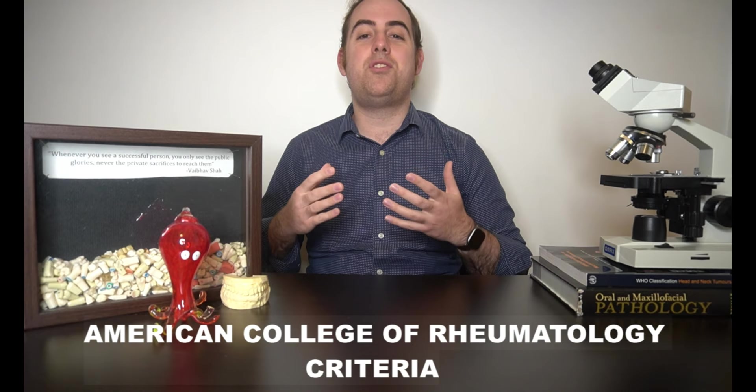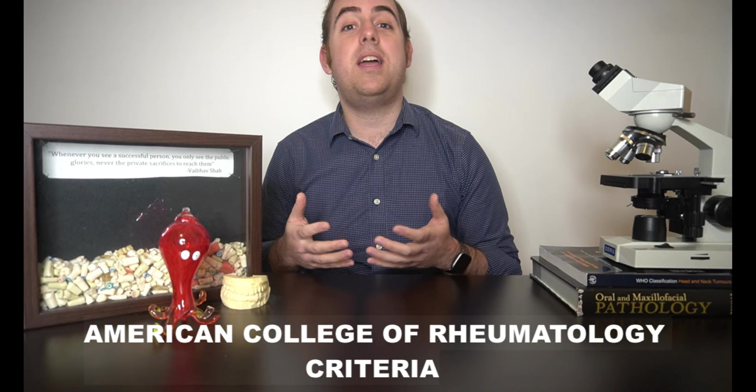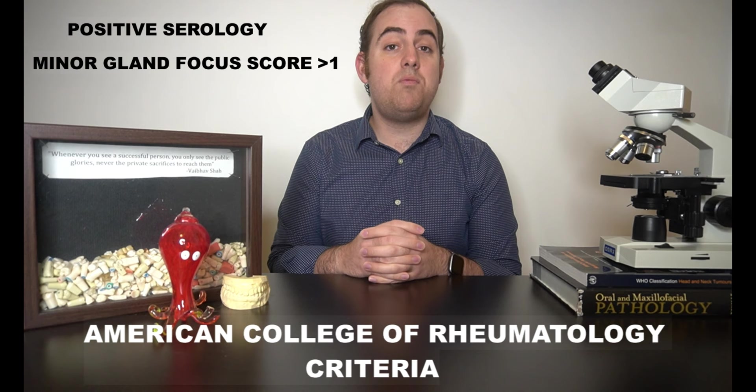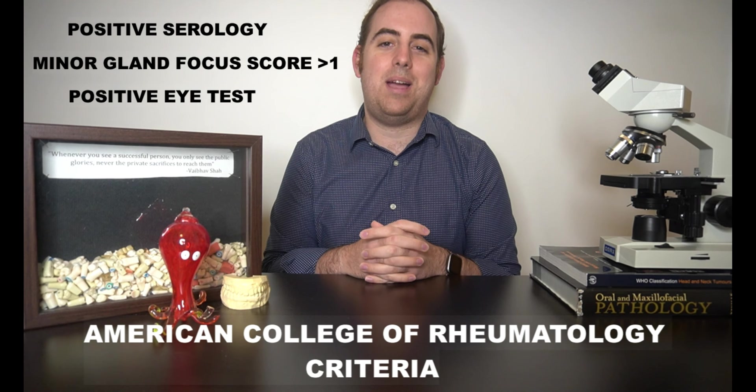The American College of Rheumatology classification is much easier. A patient is considered positive for Sjogren's syndrome if they have two of the three following objective findings. These findings are either positive serology, a minor salivary gland biopsy with a focus score greater than one, and or objective ocular findings using the tests that I described earlier.